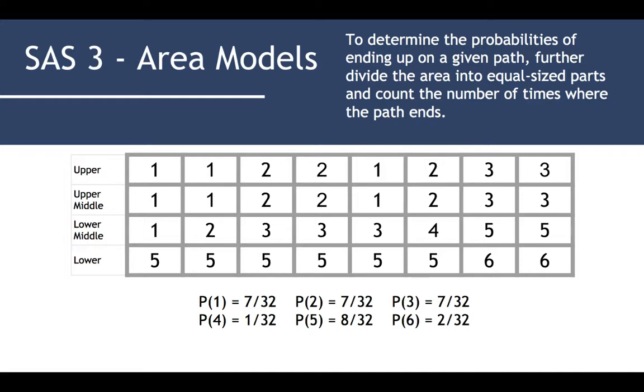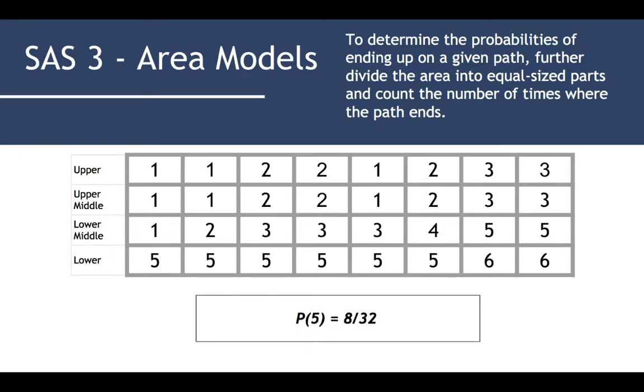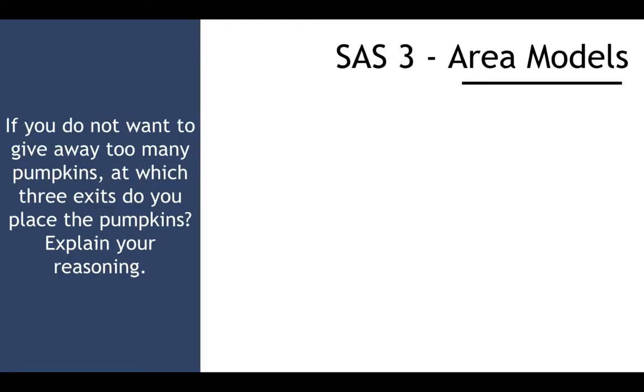P of 1 is 7/32, P of 2 is 7/32, P of 3 is 7/32, P of 4 is 1/32, P of 5 is 8/32, and P of 6 is 2/32. So exit 5 has more opportunities. Exit 5 has more opportunities to actually get pumpkins. There are eight ways to get there, so eight out of 32.